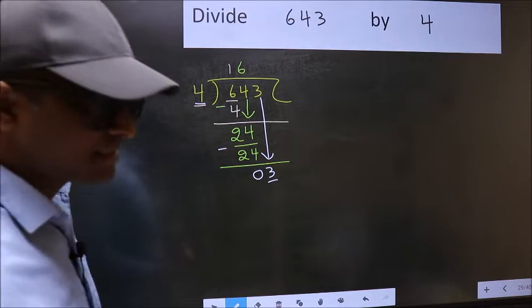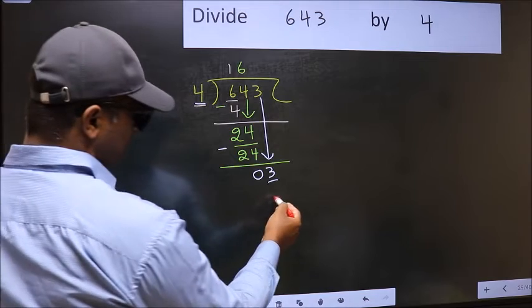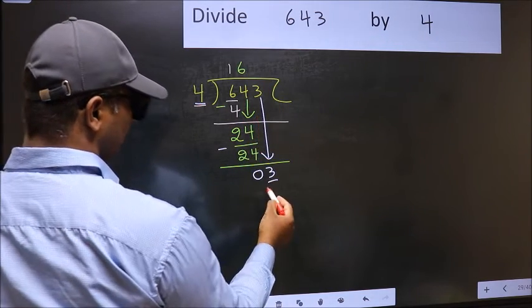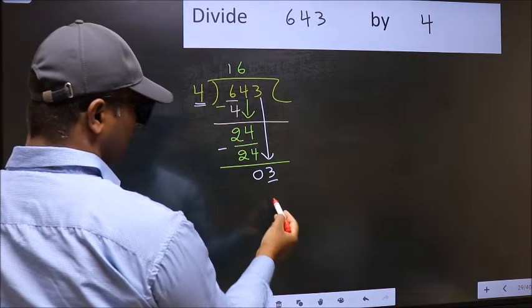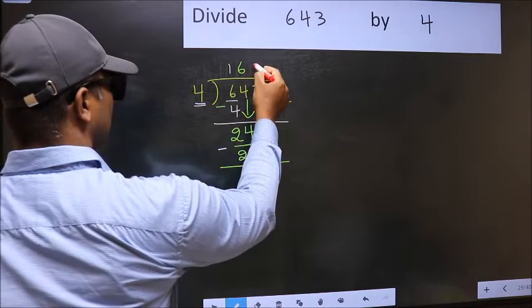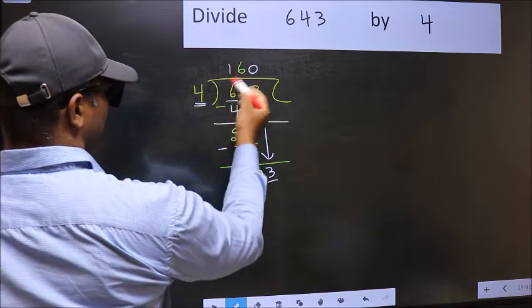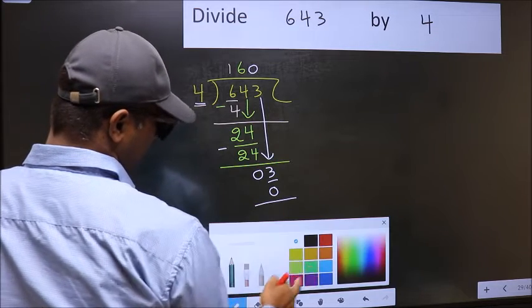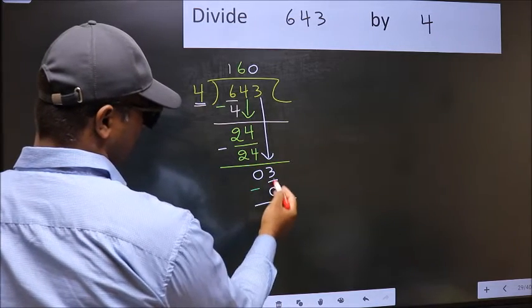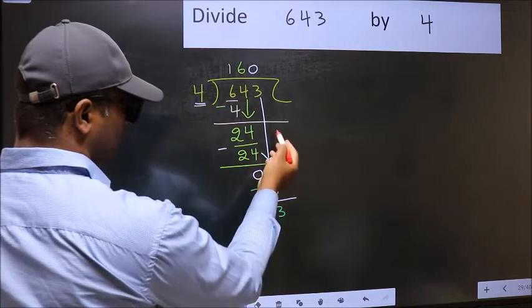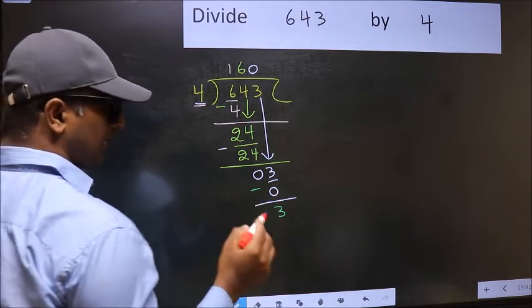Instead, what you should think of doing is: what number should we write here? If I take 1 here, I will get 4, but 4 is larger than 3, so what we should do is take 0. So 4 into 0 is 0. Now you should subtract 3 minus 0 equals 3. Over here we did not bring any number down.